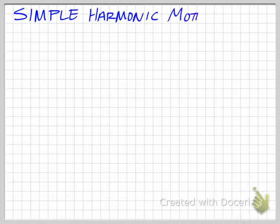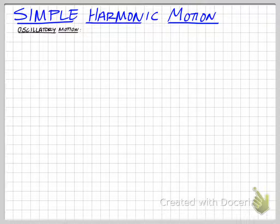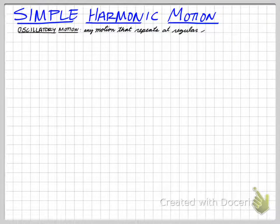All right, this unit is simple harmonic motion, so we're going to start talking about that. The first thing that we need to talk about, though, is oscillatory motion. And oscillation is just one complete cycle. Oscillatory motion is any motion that repeats at regular intervals.